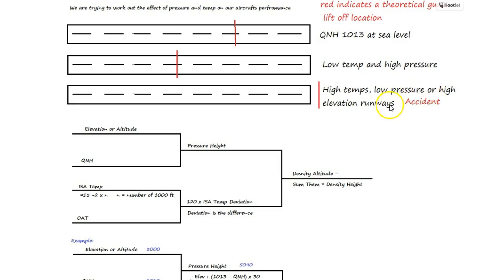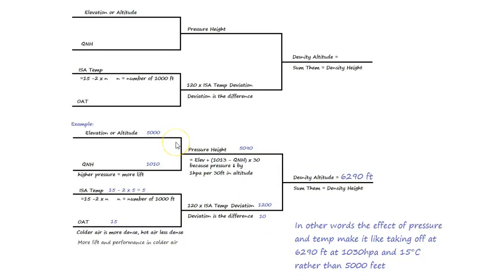So we need to know how to calculate this and we need to know the effect it will have on our aircraft as we take off, particularly when we've got heavy aircraft, at altitude, really hot days, low pressure, or combinations, or when we have marginal length runways. Now the reason we do this is what we're trying to do is work out what is the effect of pressure. So we want to go: standard pressure minus the actual pressure for today.